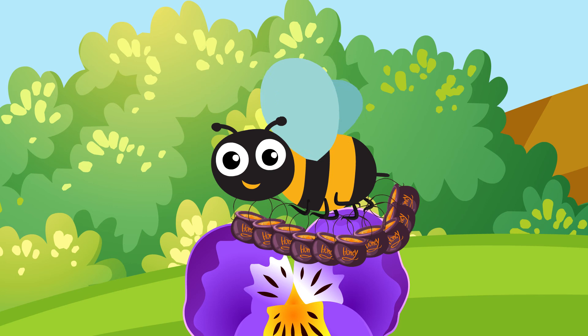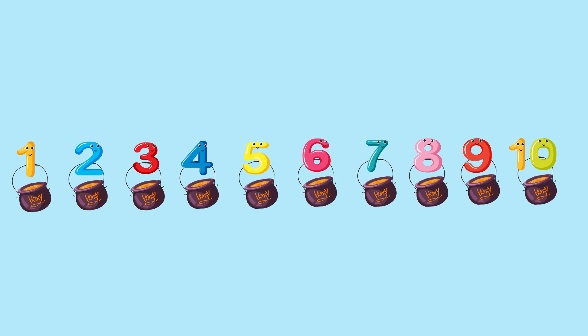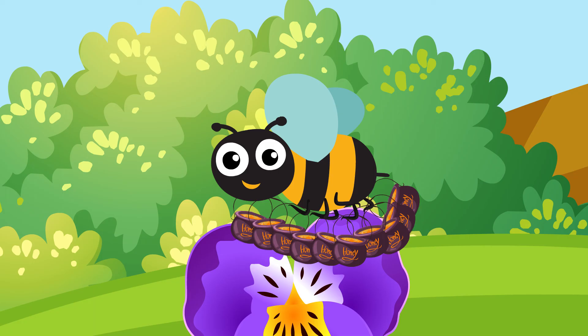1, 2, 3, 4, 5. 1, 2, 3, 4, 5. 1, 2, 3, 4, 5, 6, 7, 8, 9, 10. Now the bee has ten buckets of honey.